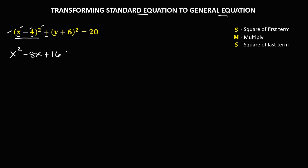Then plus, for this square of the binomial, using SMS: the square of the first term, the square of Y — that's Y squared. Then M is multiplication, so we have 2 times 6 — that's 12, then times Y — so we have positive 12Y. Then the last S, the square of the last term, so the square of 6 — that's 36.